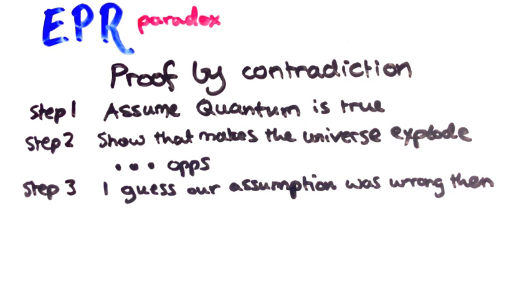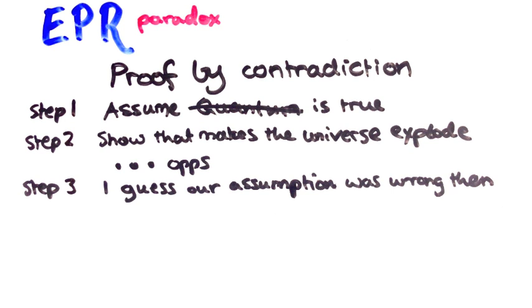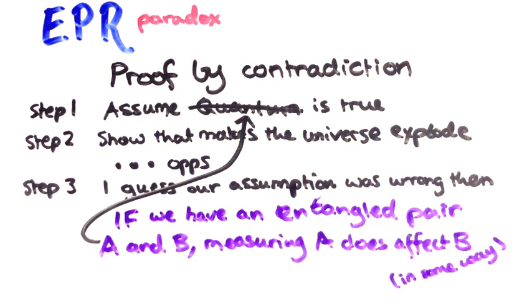Actually we don't need to assume all of quantum mechanics is true, just one little fact. We need to assume that if we have an entangled pair, A and B, then measuring A really does affect B.